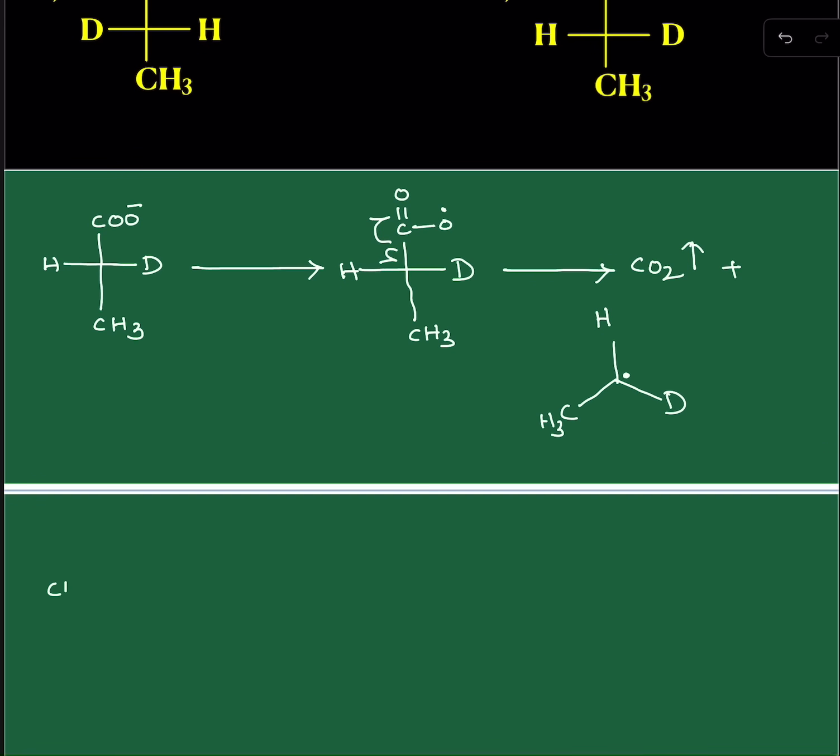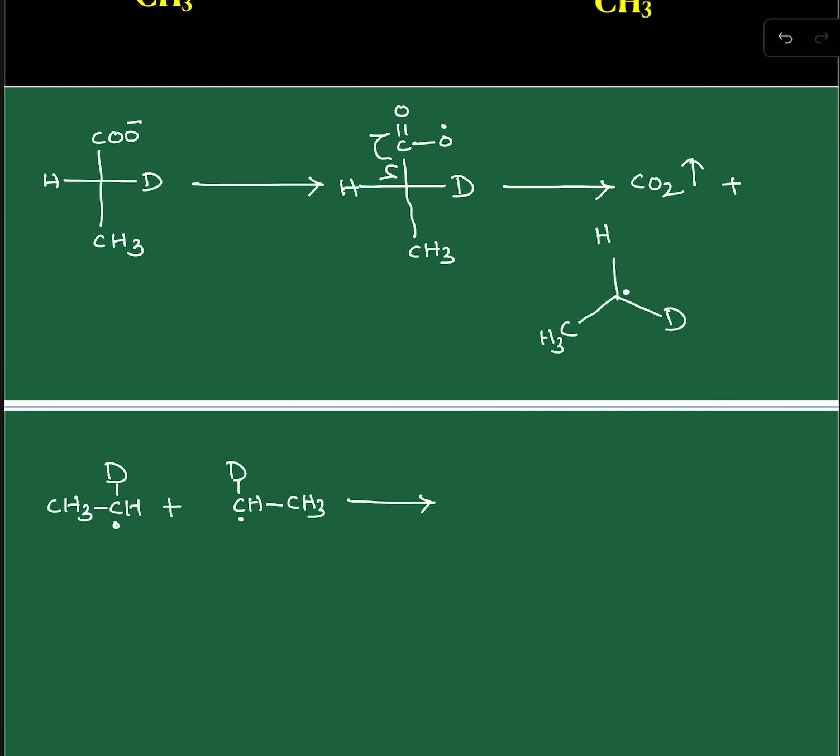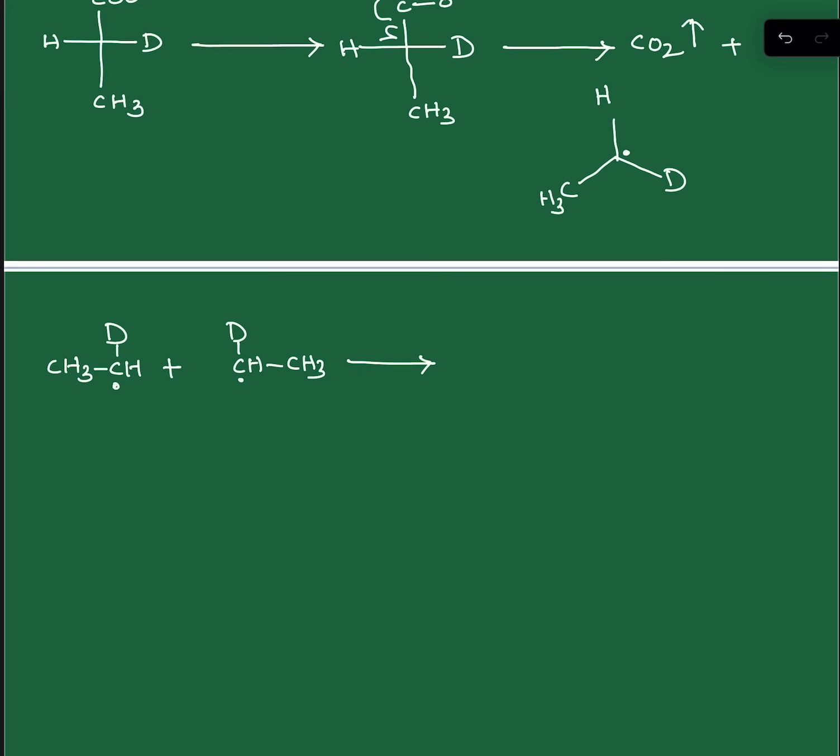Due to coupling, let me write CH3-CHD with one odd electron and another species of the same category. So it will undergo coupling. When it is undergoing coupling, you can see two chiral centers are produced simultaneously. As a result, totally three stereoisomers are possible.